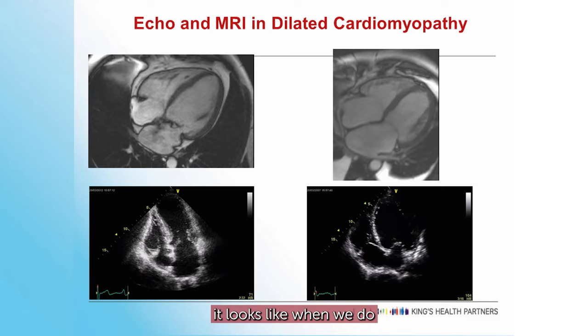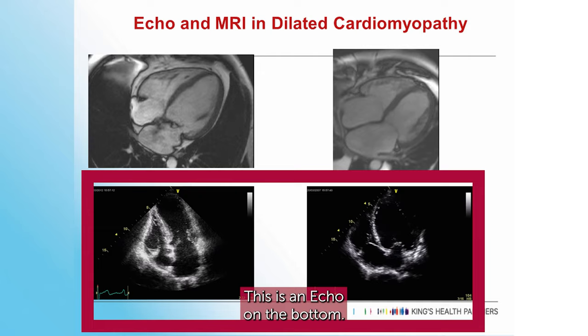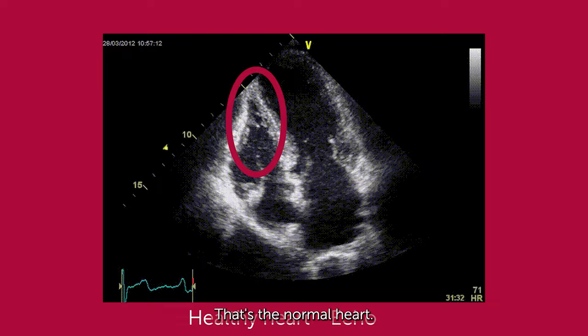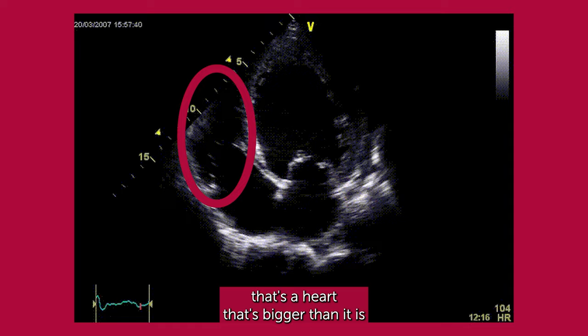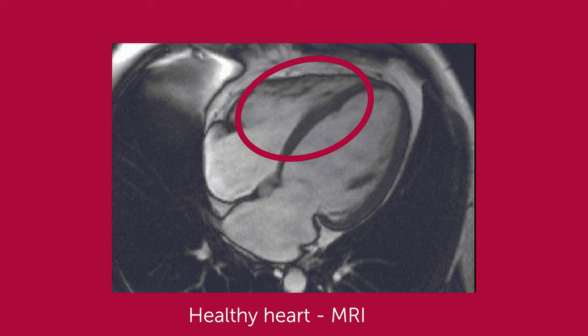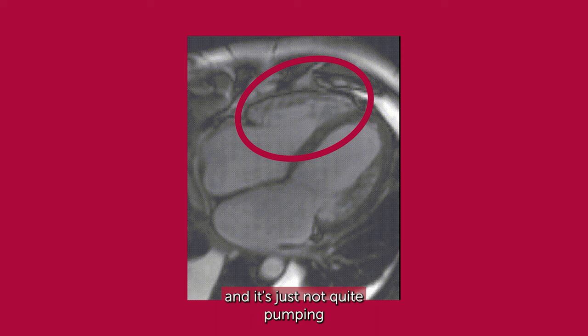This is what it looks like when we do imaging of the heart. This is an MRI scan, and this is an echo on the bottom. This is the left ventricle — that's the normal heart, you can see it contracting pretty vigorously. And that's a heart that's bigger than normal and weaker in the way it's pumping. Here you can see a heart that's bigger than it should be and just not quite pumping as well as it should be.